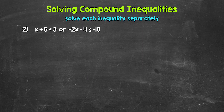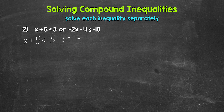Let's move on to number 2, where we have x plus 5 is less than 3, or negative 2x minus 4 is less than or equal to negative 18. Remember, we need to solve these separately. So we have x plus 5 is less than 3, and then we need to solve negative 2x minus 4 is less than or equal to negative 18.